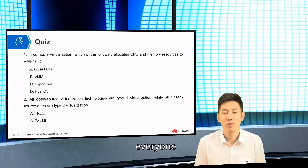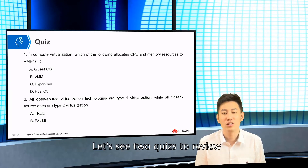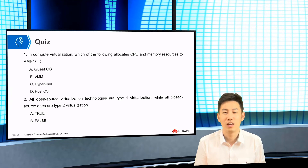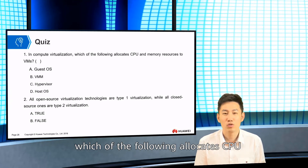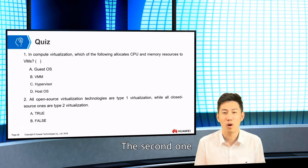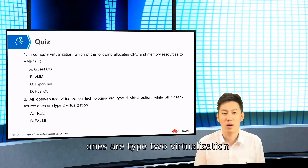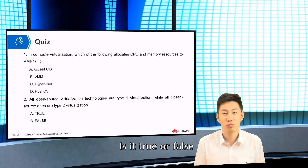Let's look at two quiz questions for review. The first quiz is: in compute virtualization, we allocate CPU and memory resources to VMs — is this true or false? The second one: all open source virtualization technologies are type 1 virtualization, while all closed source ones are type 2 virtualization — is it true or false?